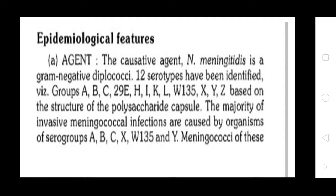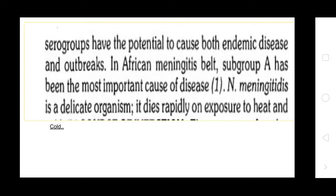The polysaccharide capsule bacteria include Klebsiella, Pneumococci, Streptococcus, and two types of Eschericia. The majority of invasive meningococcal infections are caused by organisms of serogroups A, B, C, X, W, and Y. Meningococci of these serogroups have potential to cause both endemic disease and outbreaks.